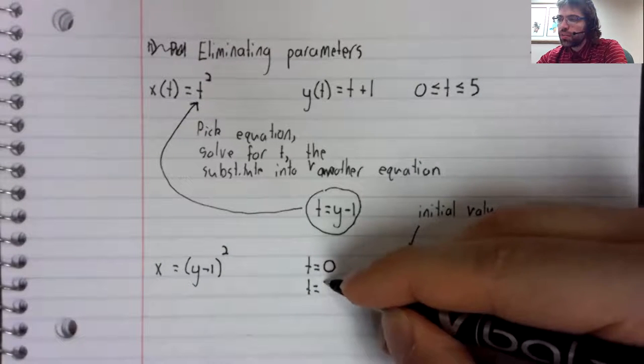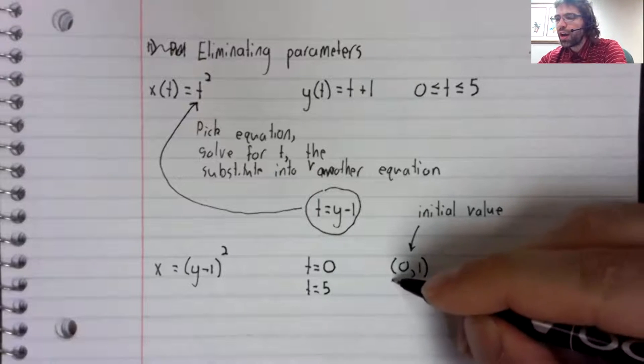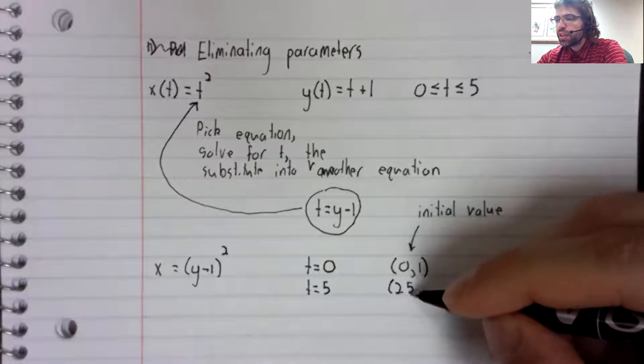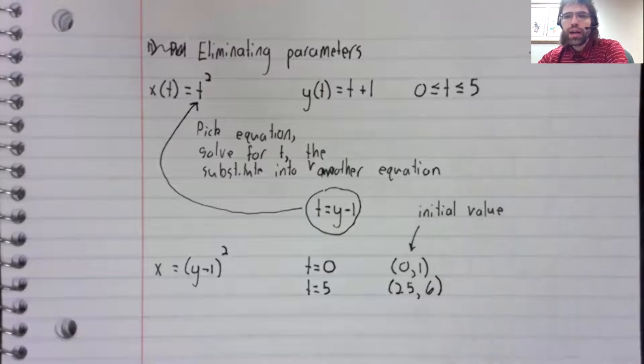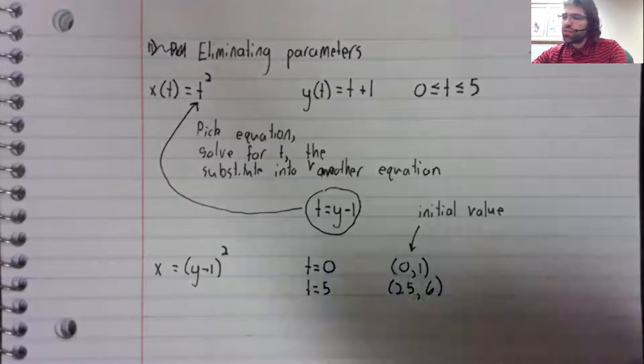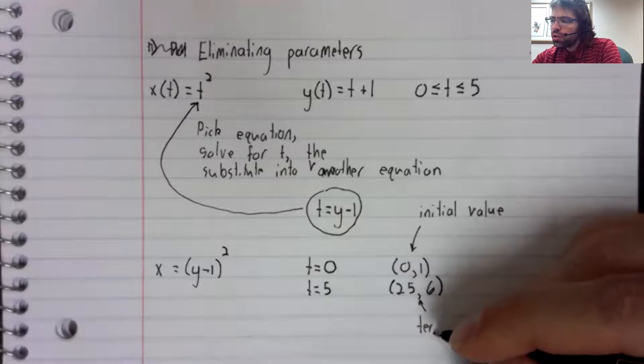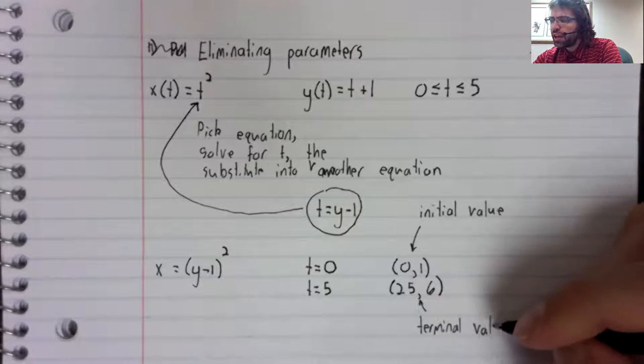And when T equals five, X is 25, Y is six. So that's our terminal value.